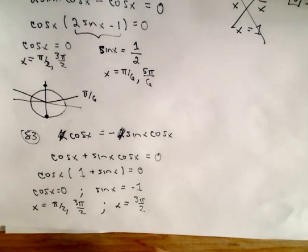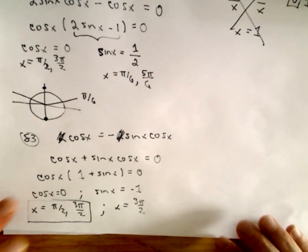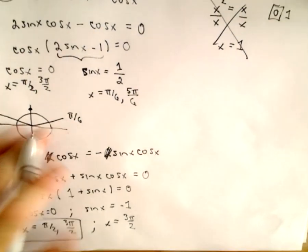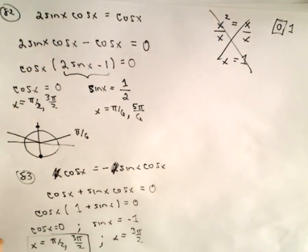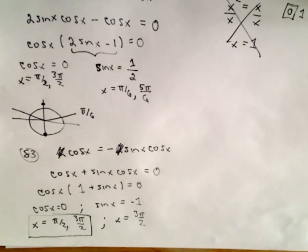So our solutions will be pi over 2 and 3 pi over 2. So again, nothing too crazy here. Just definitely wanted to point out that common mistake - it's easy to do, dividing. So you don't want to do that, but after that it's just using trig identities, factoring, and basically remembering these values on the unit circle.